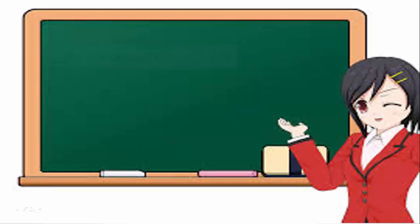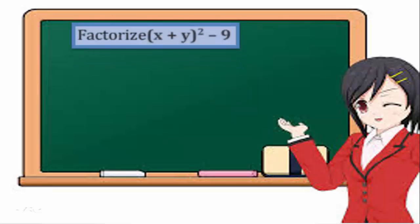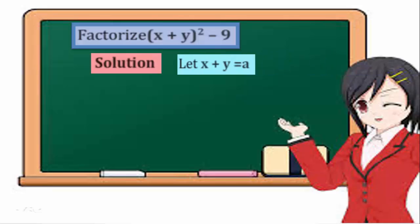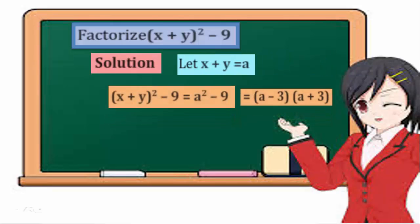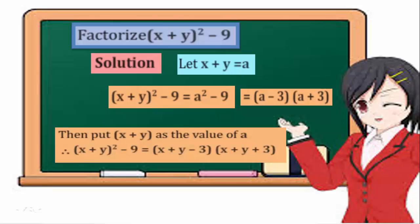Example 4: Factorize x plus y all squared minus 9. Solution: Let x plus y equal a. Then, x plus y all squared minus 9 equals a squared minus 9 equals a bracket of a minus 3 times a bracket of a plus 3. Therefore, x plus y all squared minus 9 equals a bracket of x plus y minus 3 times a bracket of x plus y plus 3.